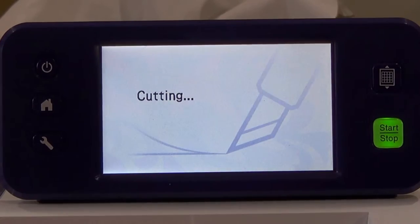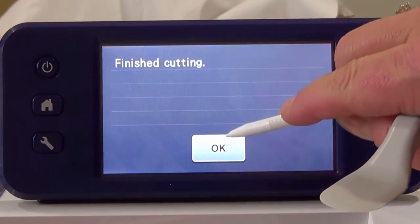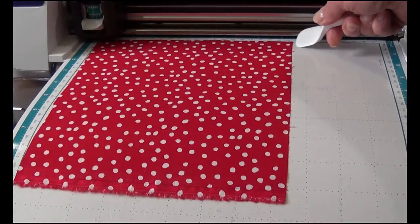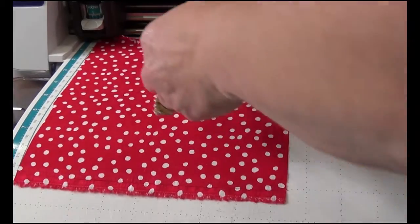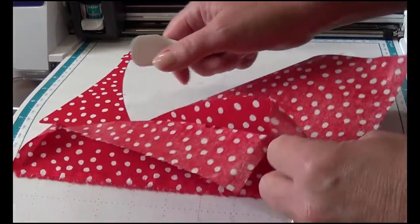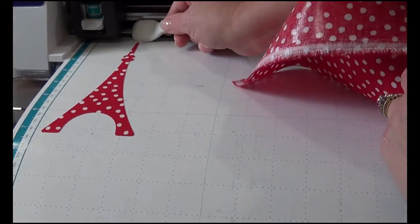Your pattern will be cut out. Press OK. Remove the applique piece from the mat. It is sometimes helpful to use your spatula to help lift things off the mat.